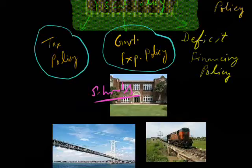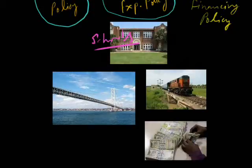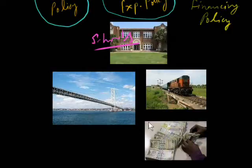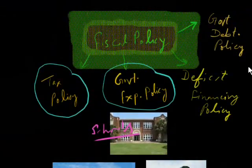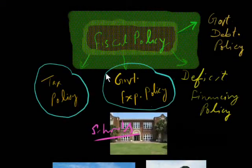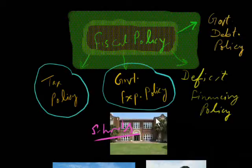Moreover, the government will also announce how many new employees will be appointed, along with the need for salaries and pension plans. These policies form the government expenditure policy. The government then compares the tax policy with the government expenditure policy.